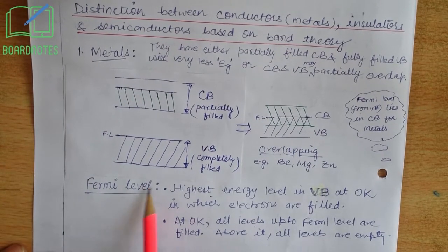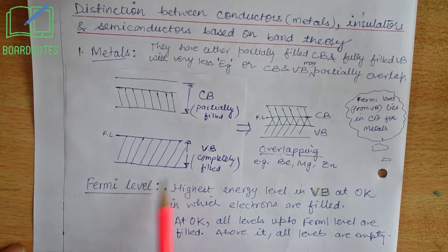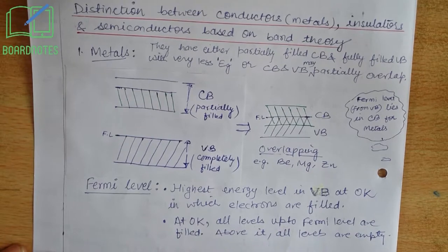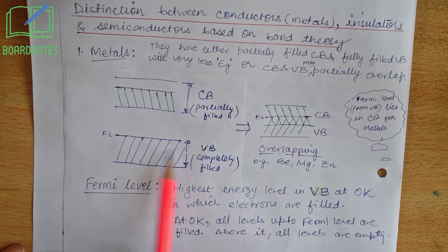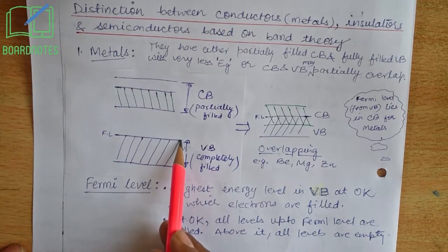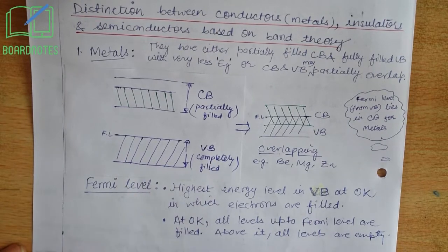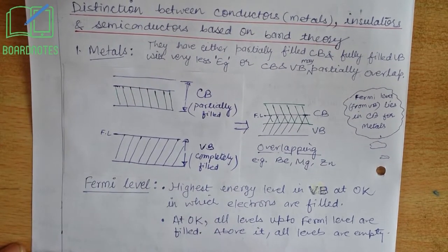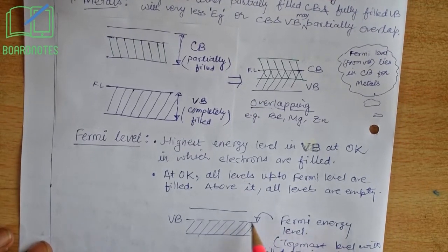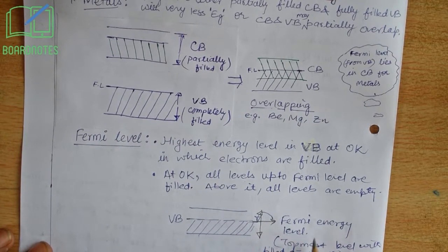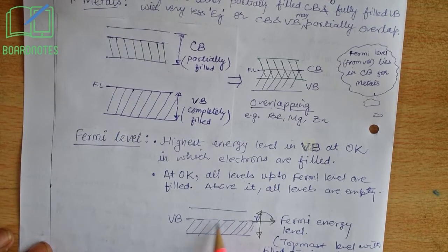Now, coming to Fermi level — what is Fermi level? The Fermi energy level is the topmost layer of the valence band with filled electrons at 0 Kelvin. It should be noted that at 0 Kelvin all levels up to the Fermi level are completely filled with electrons, and above the Fermi level all levels are empty. In case of metals and semiconductors, the topmost layer of the valence band is the Fermi energy level. However, in case of insulators or semiconductors, this level can be different, though it will still lie in the valence band. This is the topmost level with filled electrons at 0 Kelvin.